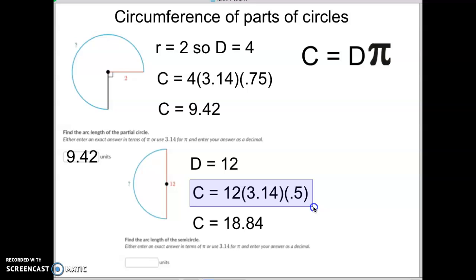Okay, so 12 times 3.14 times 0.5, use your calculator, please, equals 18.84. And yeah, that's all there is to it, guys.